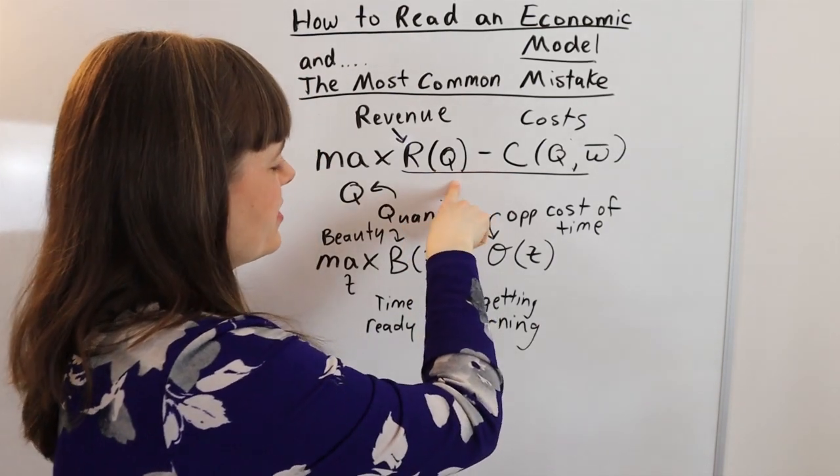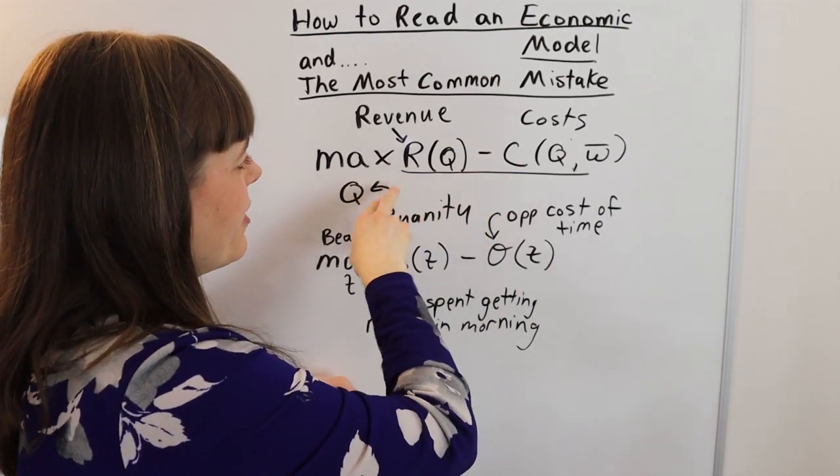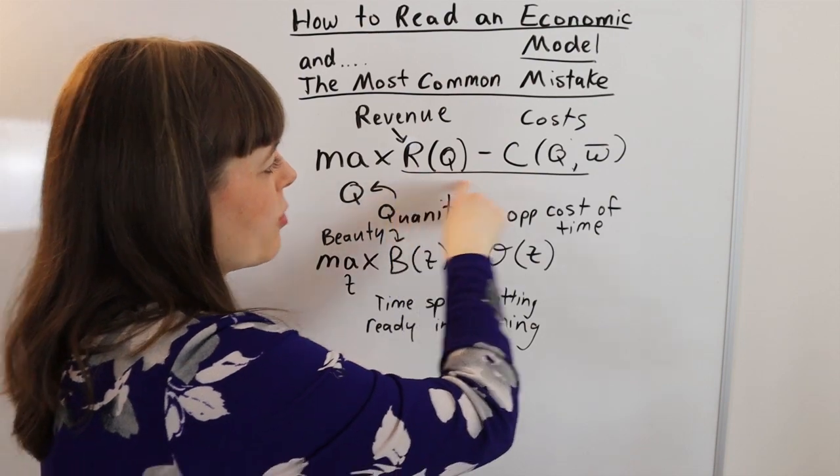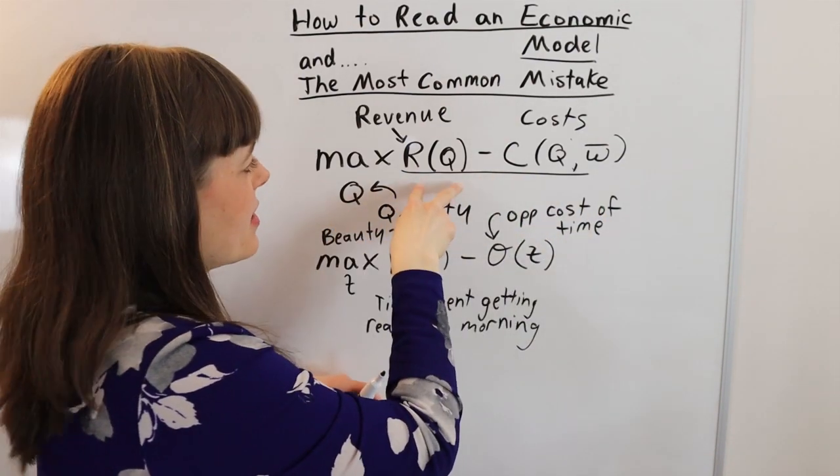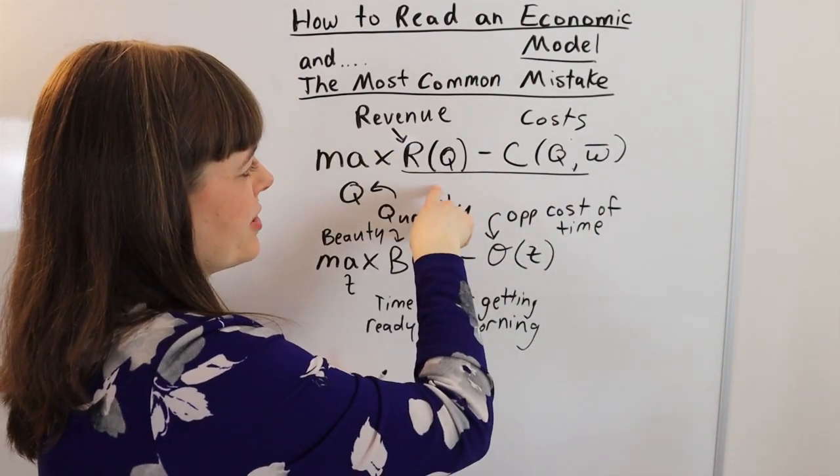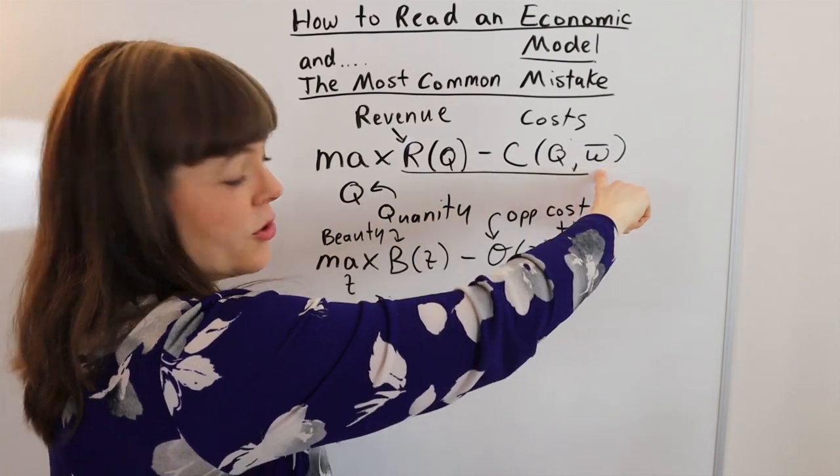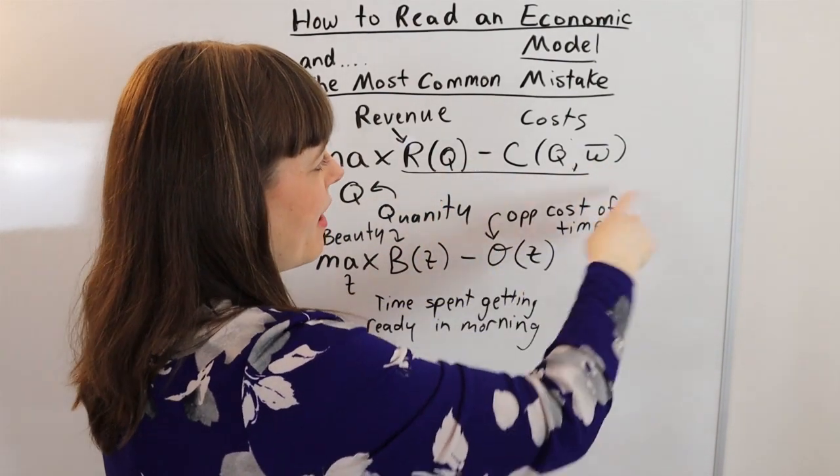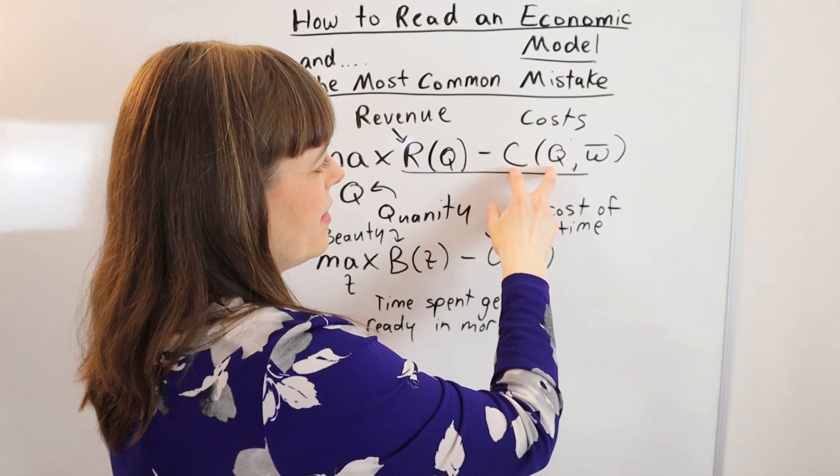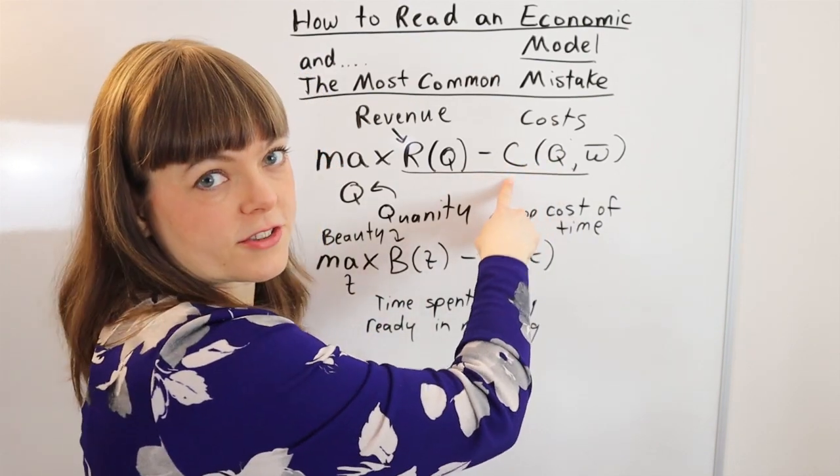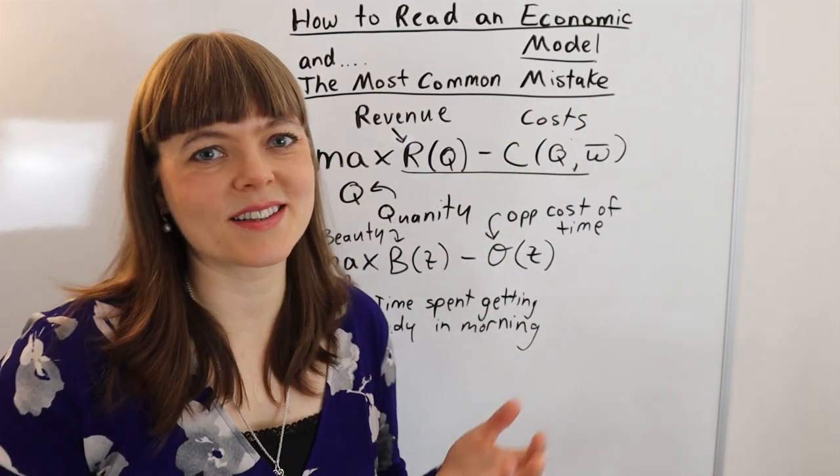But after you know that, then you can start to sort of figure out piece by piece, what are we maximizing, what are we choosing, why does each relationship hold, and how do the exogenous variables modify the relationship between the choice variable and the cost or benefit. But that's basically how you do it.